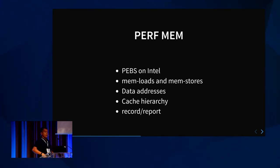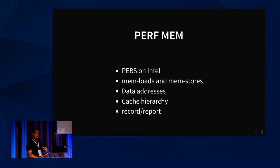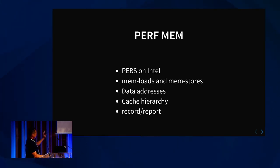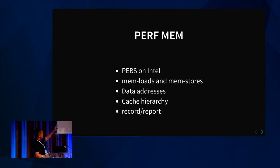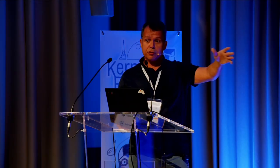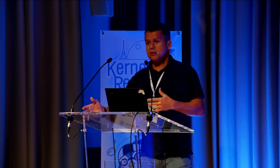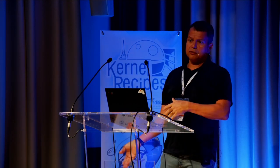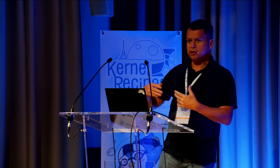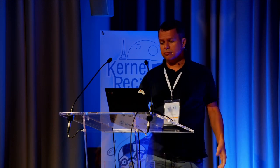You could ask for a last branch record to see the sequence of basic blocks that got to that point. It works just like other Perf tools like 'perf record' and 'perf report'. You have 'perf mem record', you run it through your workload pointing to some specific process, a cgroup, a CPU, or a workload that you start from the tool — same experience.